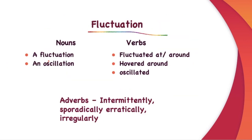Then for fluctuations, you can use these words as nouns: a fluctuation, an oscillation. And verbs which are fluctuated at or fluctuated around or hovered around or oscillated. And for adverbs, you can say intermittently, sporadically, erratically, irregularly.